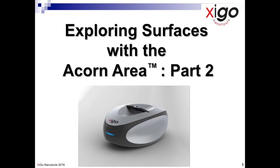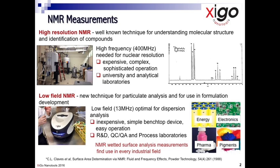Welcome to the second and concluding part of exploring surfaces with the Acorn Area. In part one we introduced Exegos' Acorn Area, a small and easy to use low field 13 megahertz NMR device that utilizes NMR liquid relaxation to investigate and study the nature of particle suspensions. This new use of NMR relaxation for surface analysis was pioneered by Exegos and provides a paradigm shift compared with traditional particle measurement instrumentation.